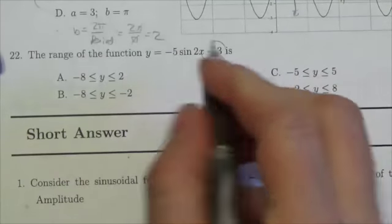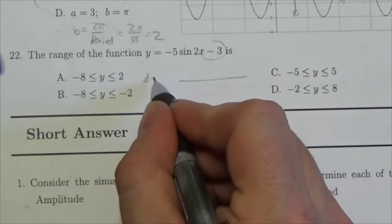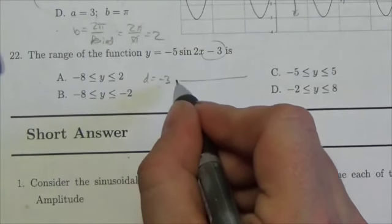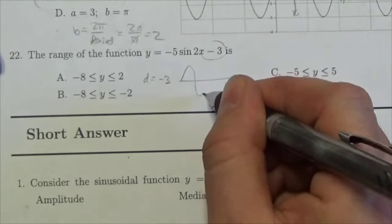Now, remember the d value tells us the middle of the graph. So this is d, and d equals negative 3. Then the graph fluctuates above and below that.